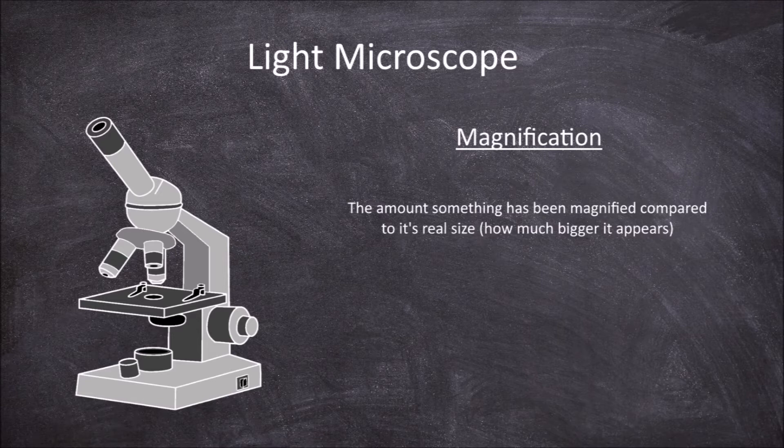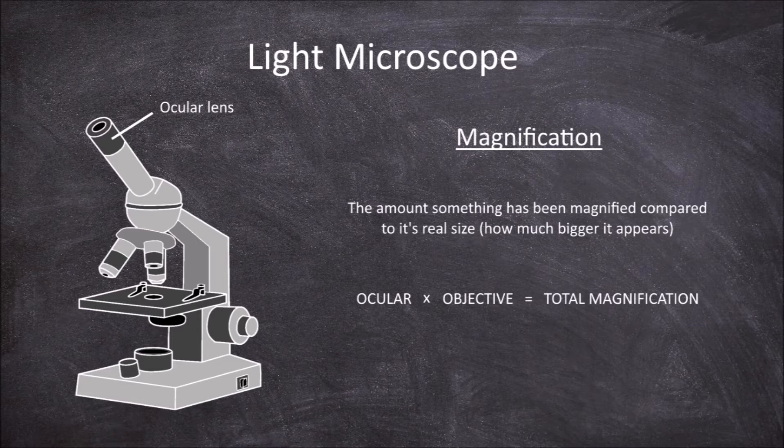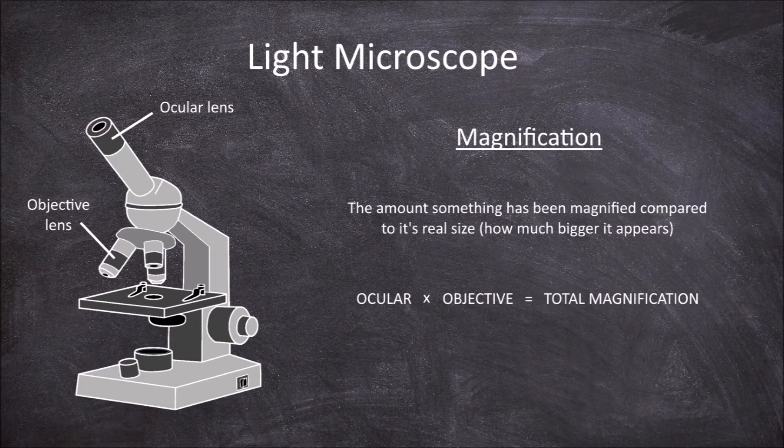To determine the total magnification, you times the magnification of the ocular lens, the eyepiece, by the magnification of the objective lens used. The magnification of the ocular lens should be written on the side of it, or in the user manual. The objective lenses have the magnification written on the side of the lenses.